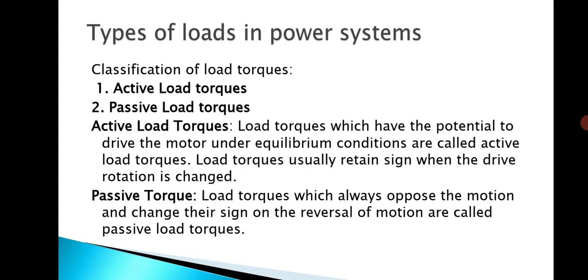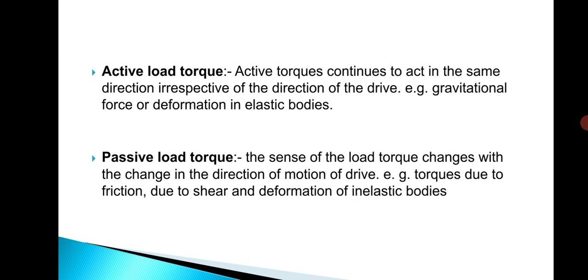Passive load torques always oppose the motion and change their sign on reversal of the motion — these are called passive load torques. For example, if a motor is being driven and due to friction the direction of the motor may change, this type of load torque is called passive load torque. Active load torques continue to act in the same direction irrespective of the direction of the drive, such as gravitational force or deformation in an elastic body.